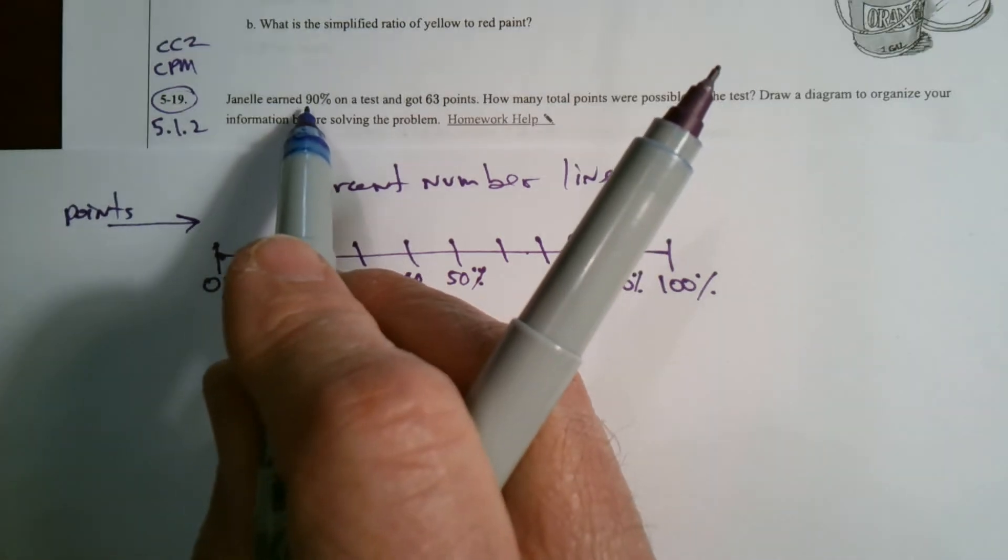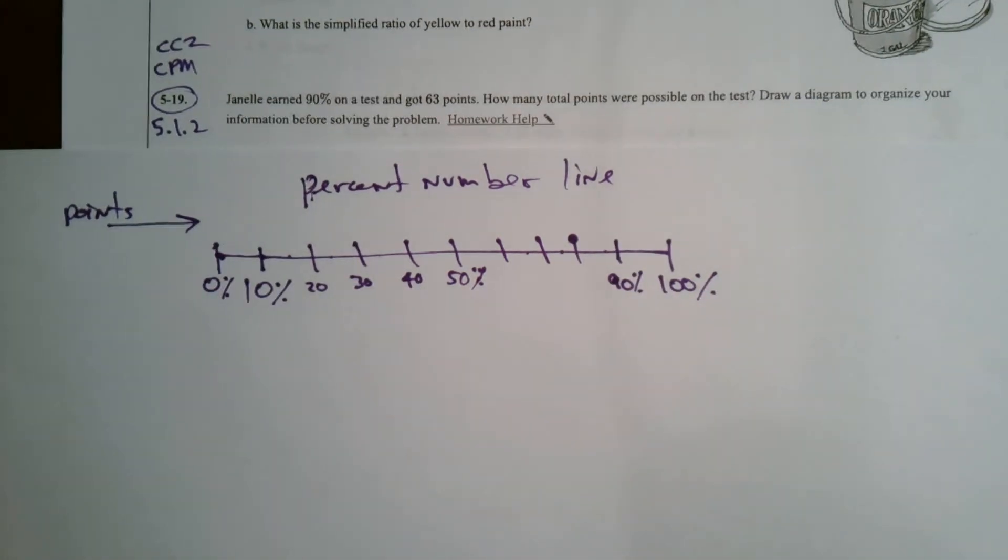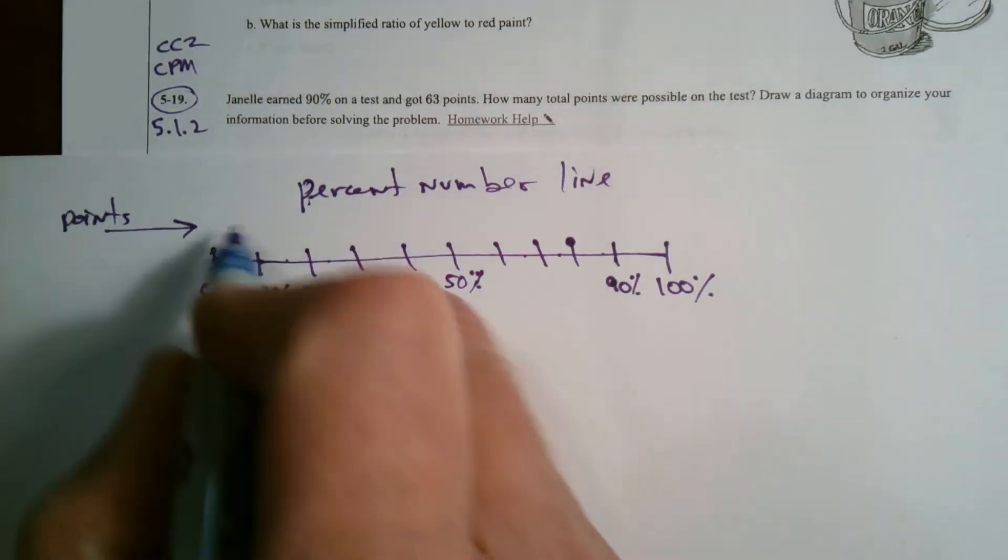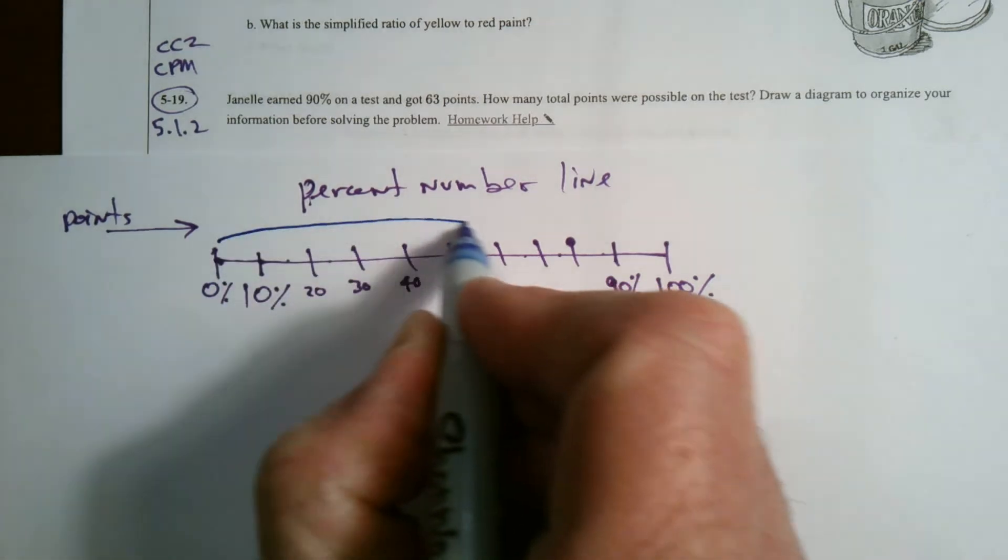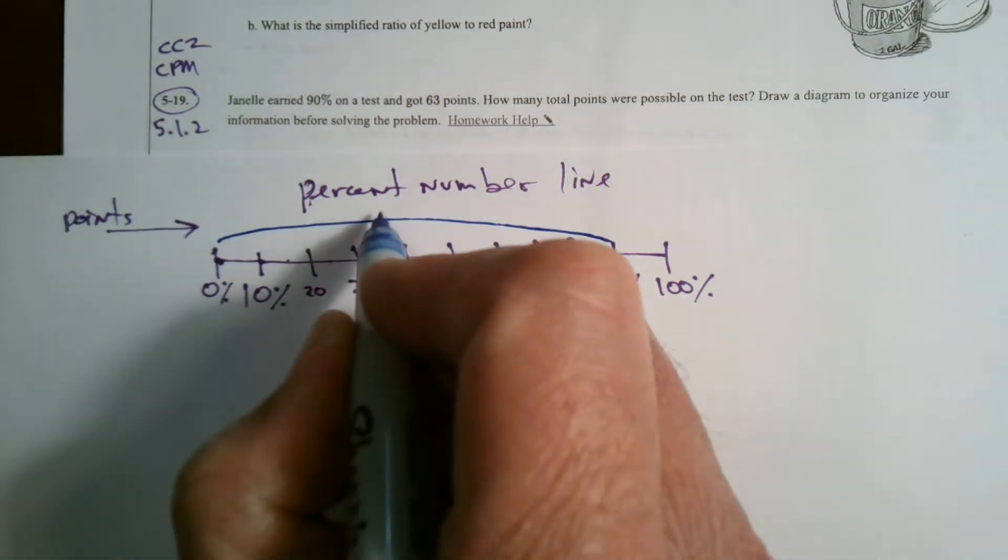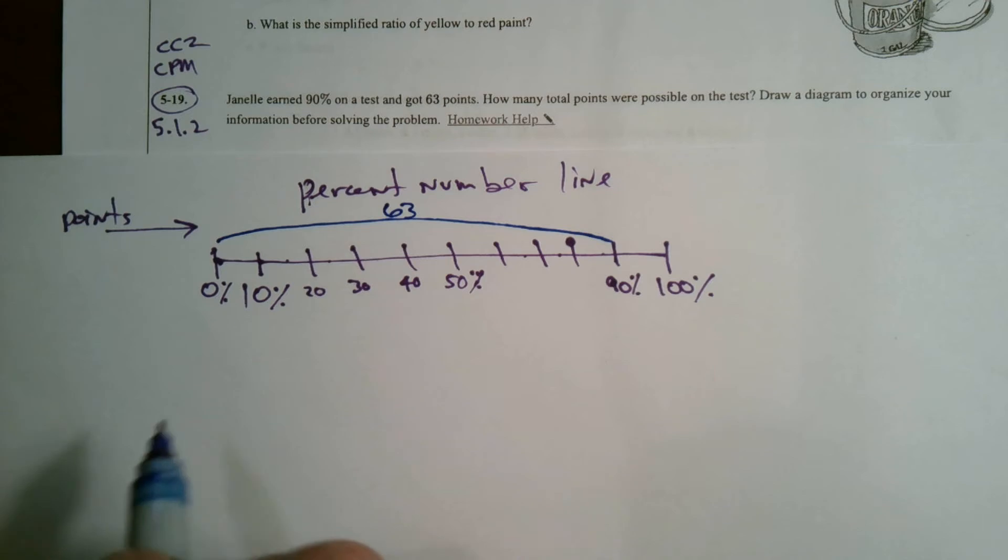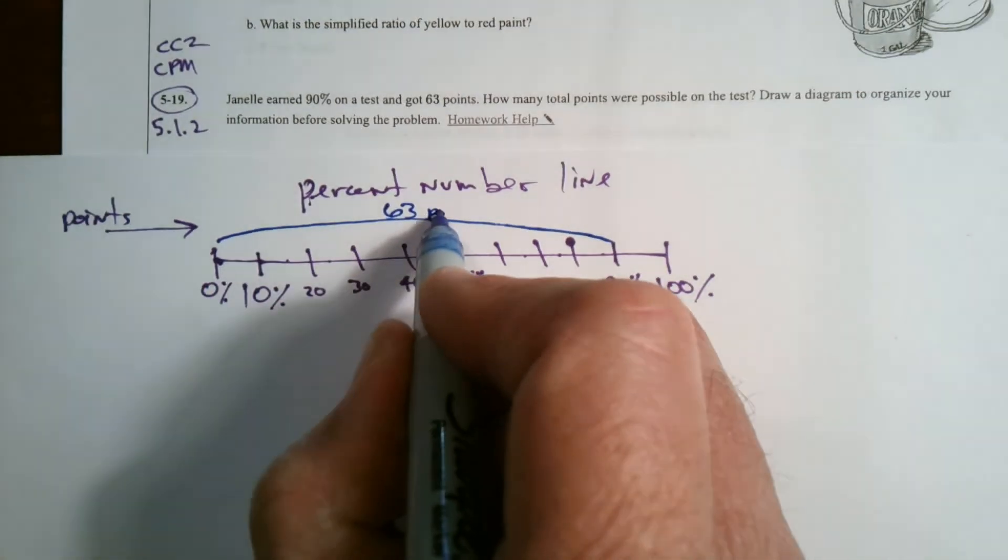So what do I know? I know that from 0 to 90, 90%, this region from here to here, all the way to 90% is 63. To get a 90%, she had 63 points.